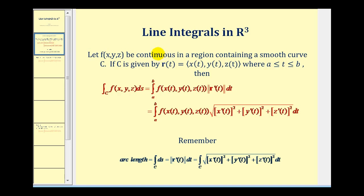So if we have a continuous function f of x, y, z in a region containing a smooth space curve given by the vector-valued function as we see here, where t is on the closed interval from a to b, then we can evaluate this function of three variables along the space curve with respect to s by evaluating this integral here with respect to t.